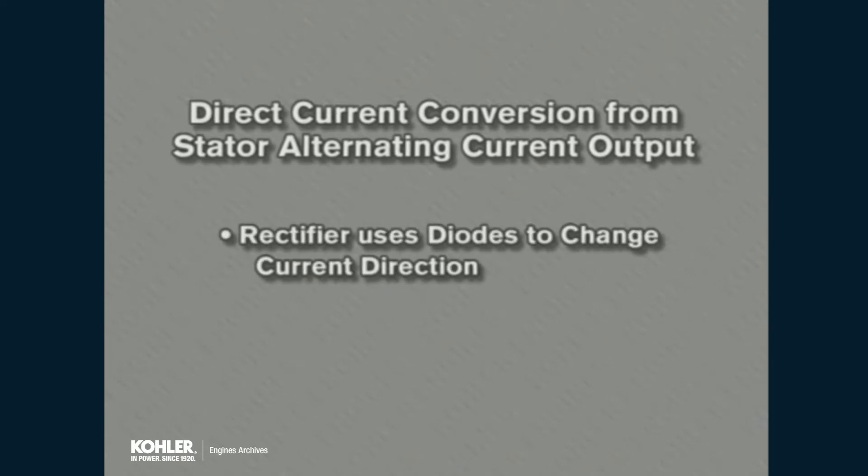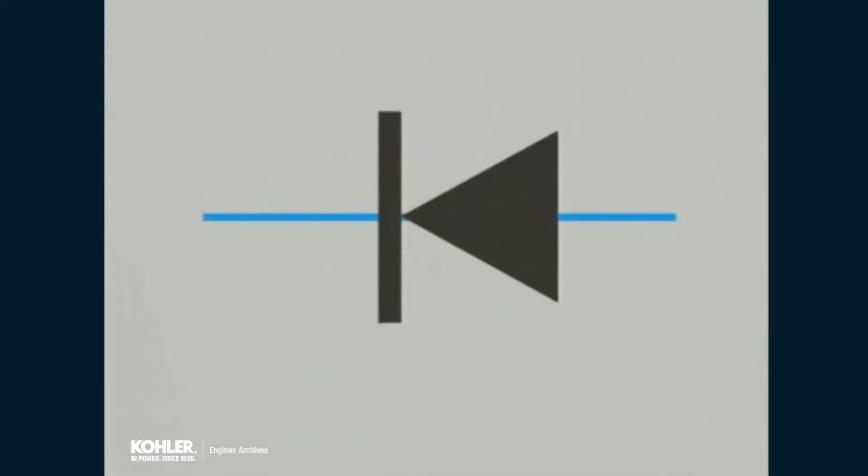This means is the electrical rectifier. A rectifier uses diodes to accomplish this task. A diode is a sort of electrical check valve, with a closed circuit in one direction allowing current flow. The diode creates an open in the circuit in the opposite direction, preventing reverse current flow.